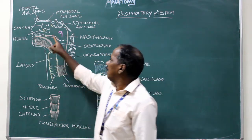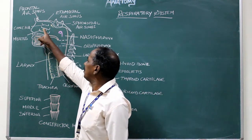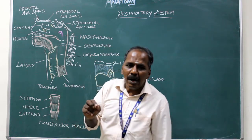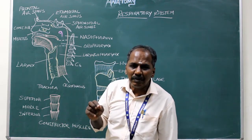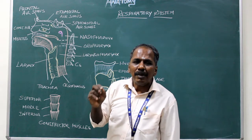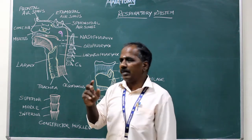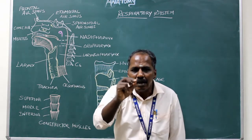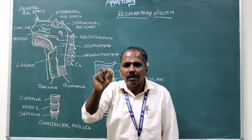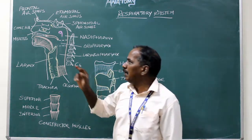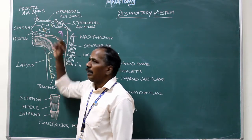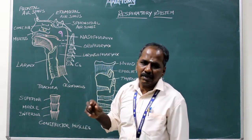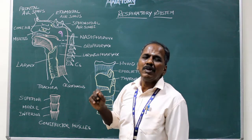In the middle meatus, there is a round bulge known as bulla ethmoidalis, which is produced by the middle ethmoidal air sinuses. Below the bulla ethmoidalis, there is a semilunar-shaped sulcus or groove. The opening is known as hiatus semilunaris.